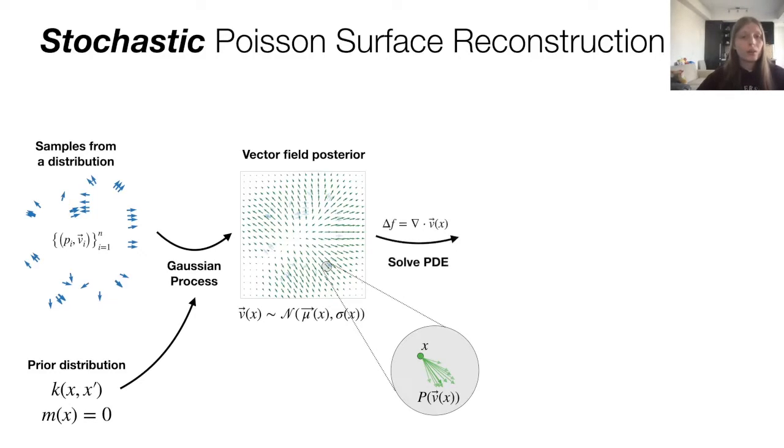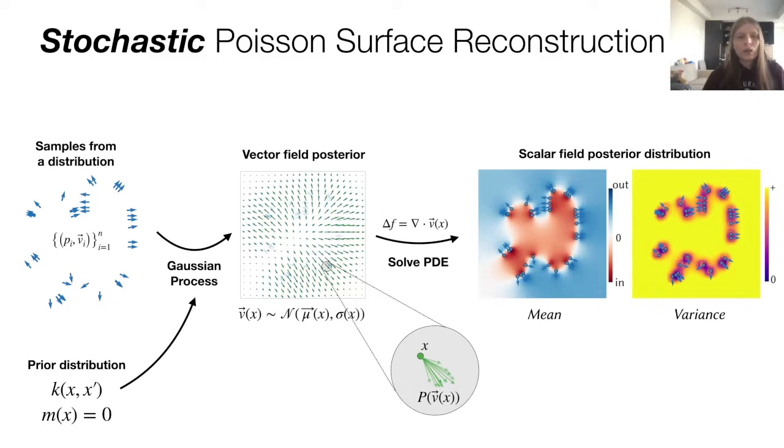The same way that we solved the PDE in the space of functions before, we can solve it in the space of distributions. And we don't just get a scalar function, we get a whole posterior distribution for said scalar function. What does that mean? It means that for every point in the plane, we have a mean and a variance, which fully determine a Gaussian distribution of what the scalar field looks like at that point.